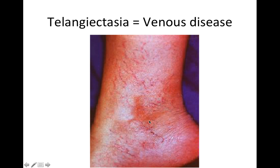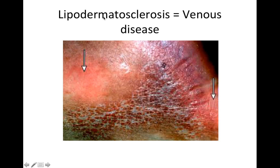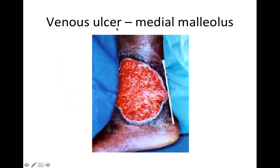Telangiectasias are dilated red blood vessels on the skin and may suggest venous disease. If seen on the chest, they may indicate chronic liver disease. Lipodermatosclerosis is due to continual chronic extravasation of red blood cells, which break down within the extracellular matrix, releasing haemoglobin. Macrophages take up this haemoglobin and iron particles remain within them, causing the golden-brown bronze discolouration of the skin. The arrows here point to atrophie blanche. Venous ulcers are often located at the medial malleolus, whilst arterial ulcers are at the lateral malleolus.